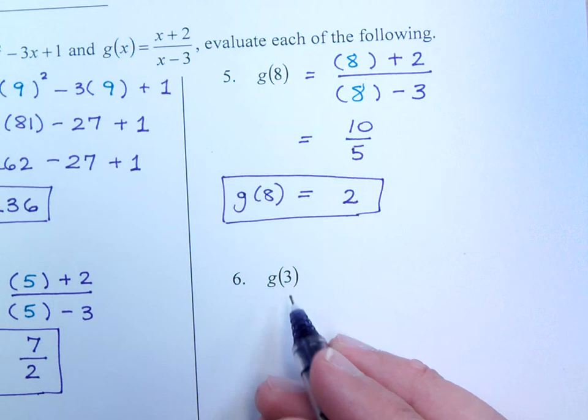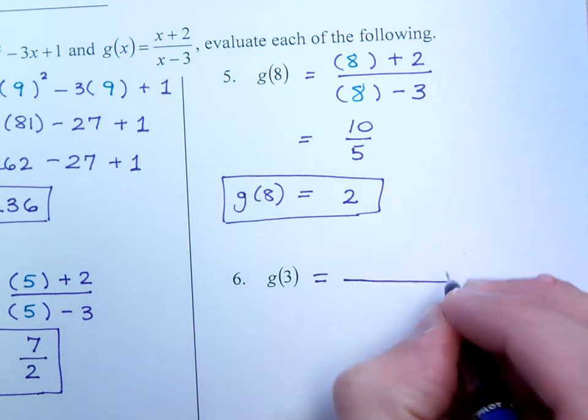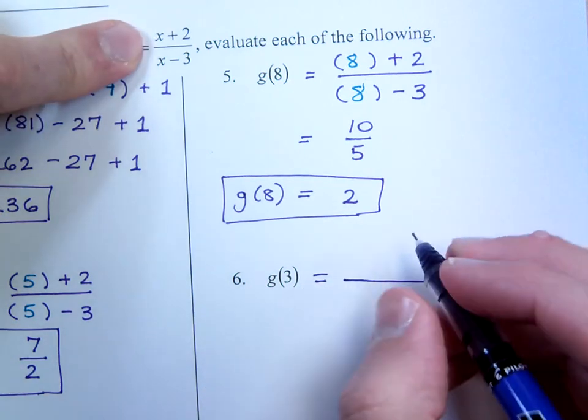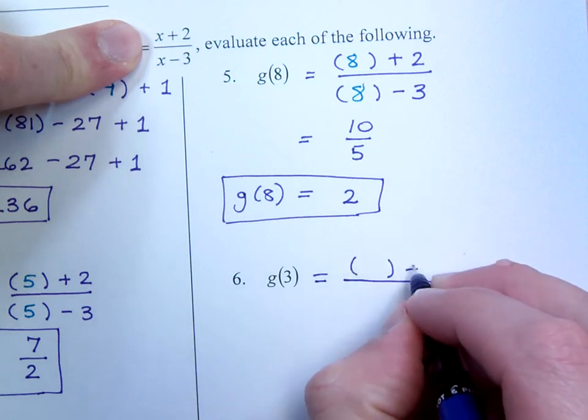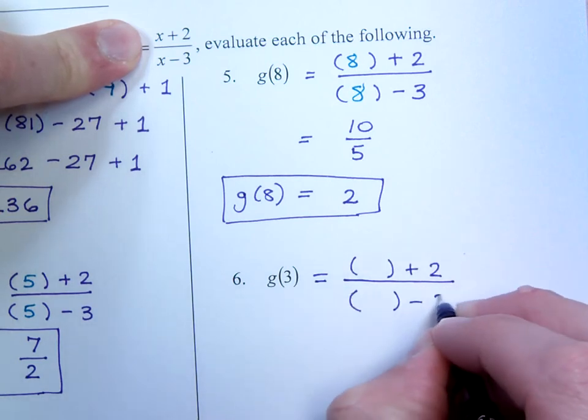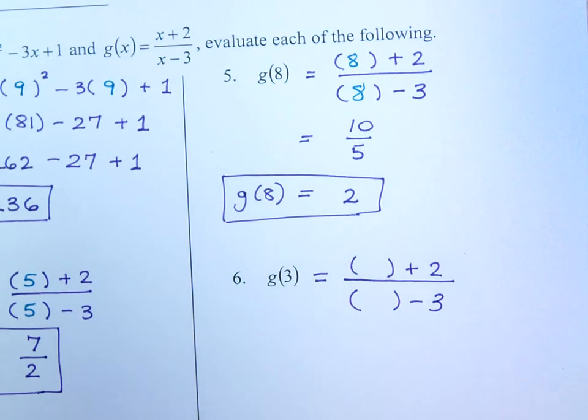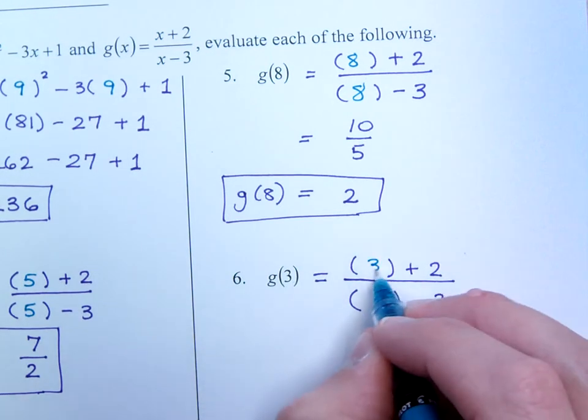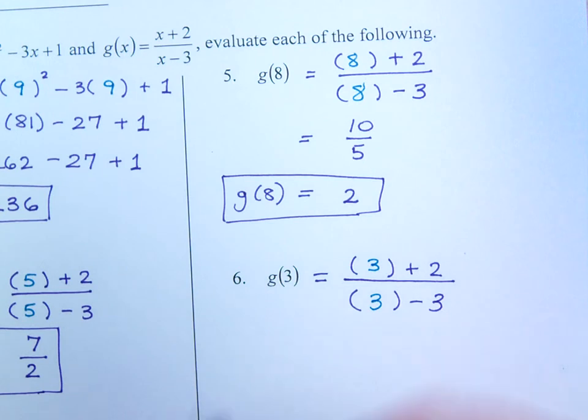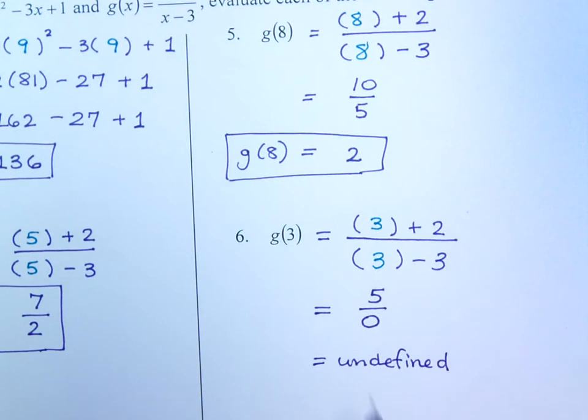And what about number 6? Well again, rewrite this but instead of the x's you're going to write parenthesis. My input value is 3, so I plug in 3 here and here. When I finish this I end up with 5 divided by 0, which is a problem for us. Because we can't divide by 0. When we do that means that we are undefined.